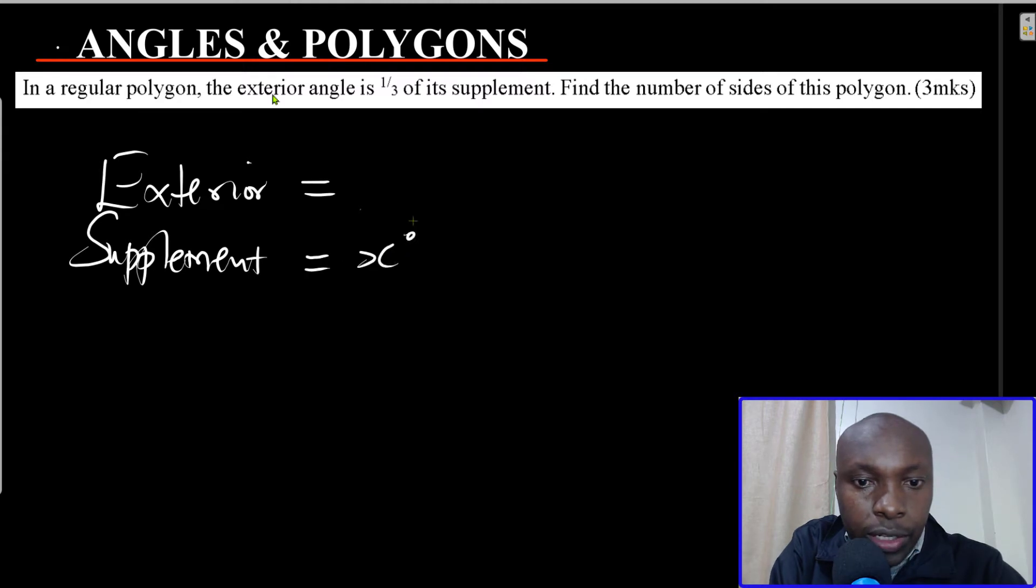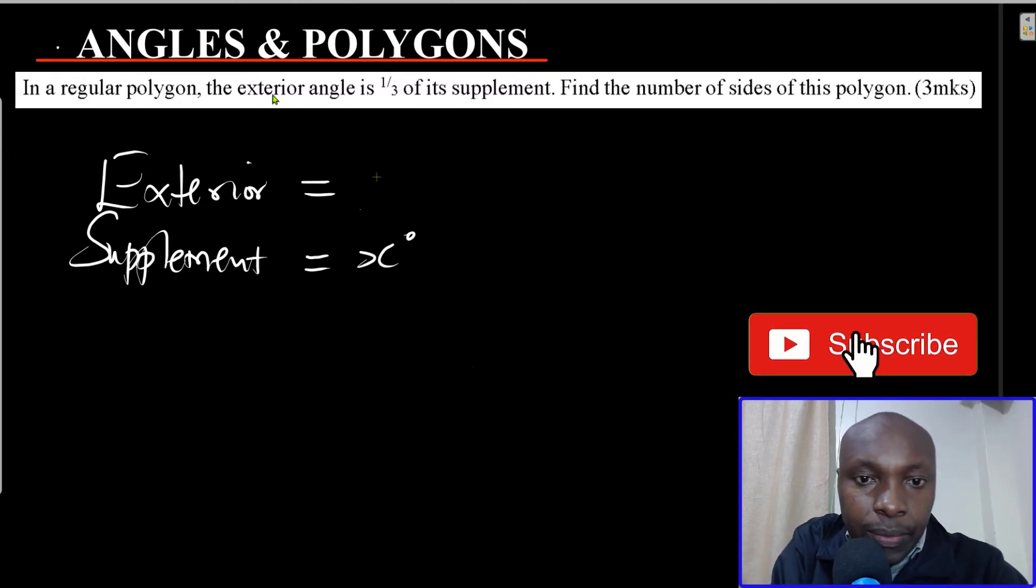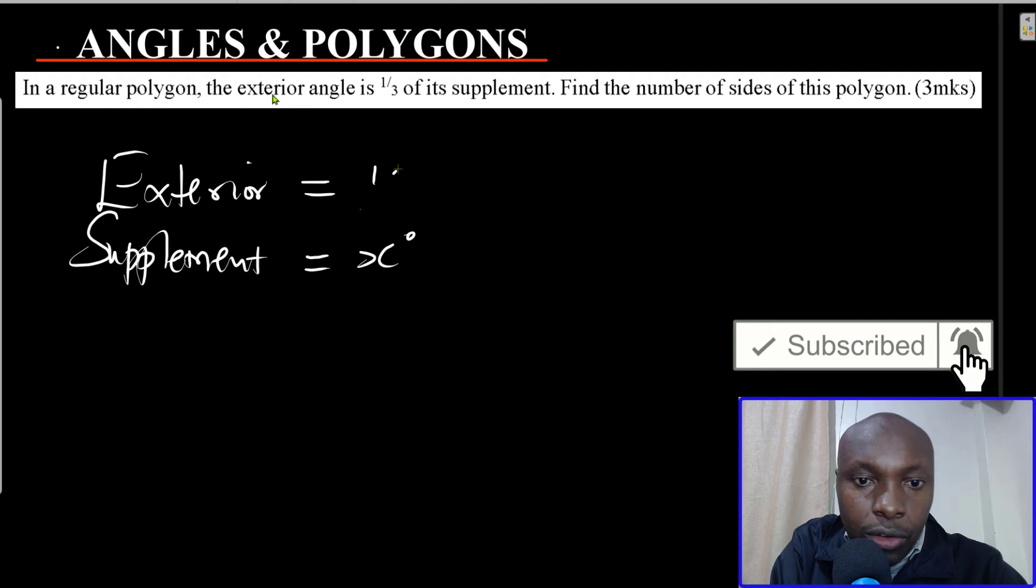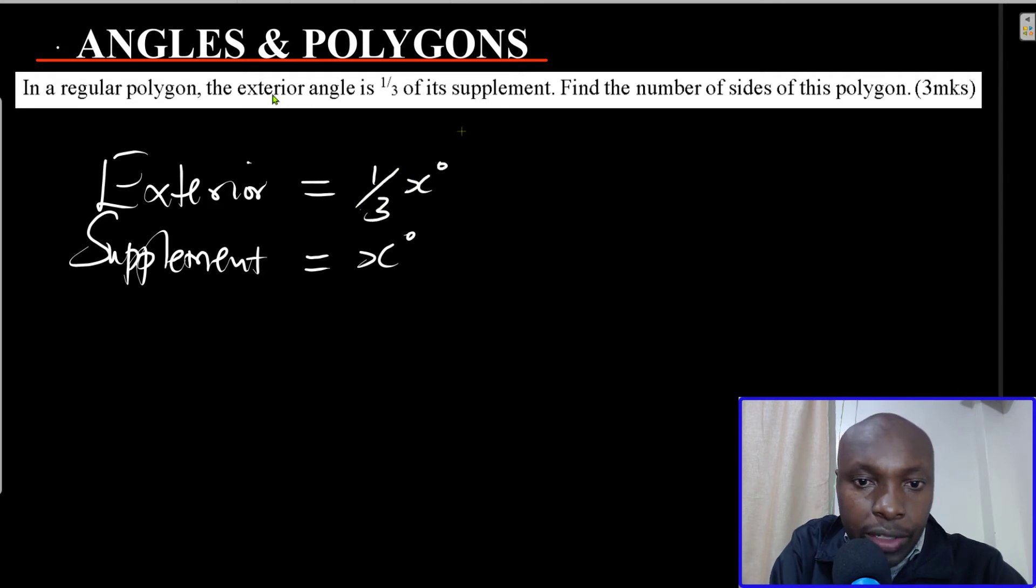So if the exterior angle is a third of its supplement and the supplement is x degrees, then it means that the exterior angle will be a third of x degrees.